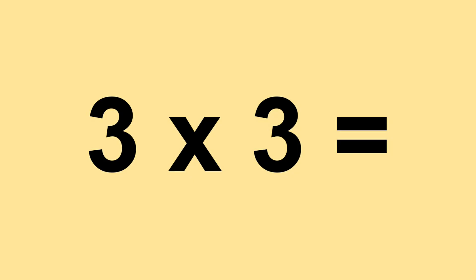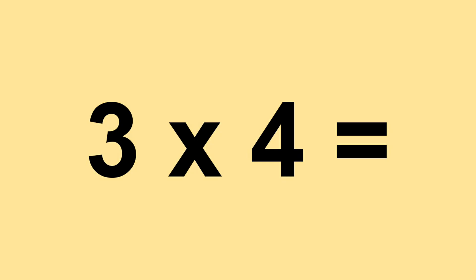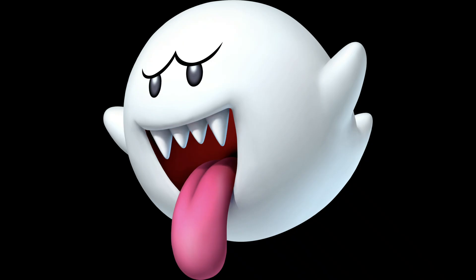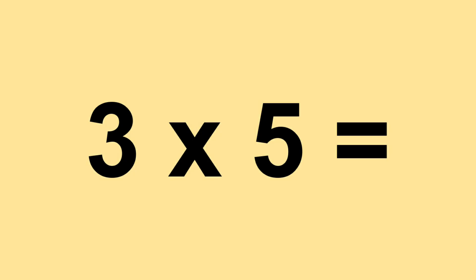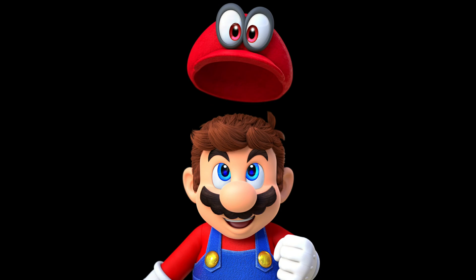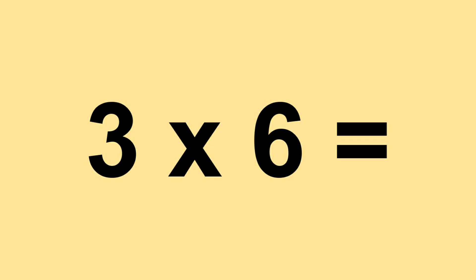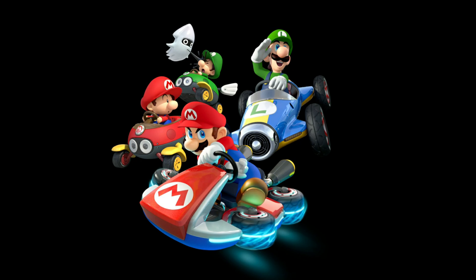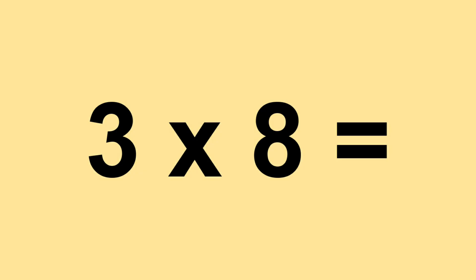Three times three equals nine. Three times four equals twelve. Three times five equals fifteen. Three times six equals eighteen. Three times seven equals twenty-one. Three times eight equals twenty-four.